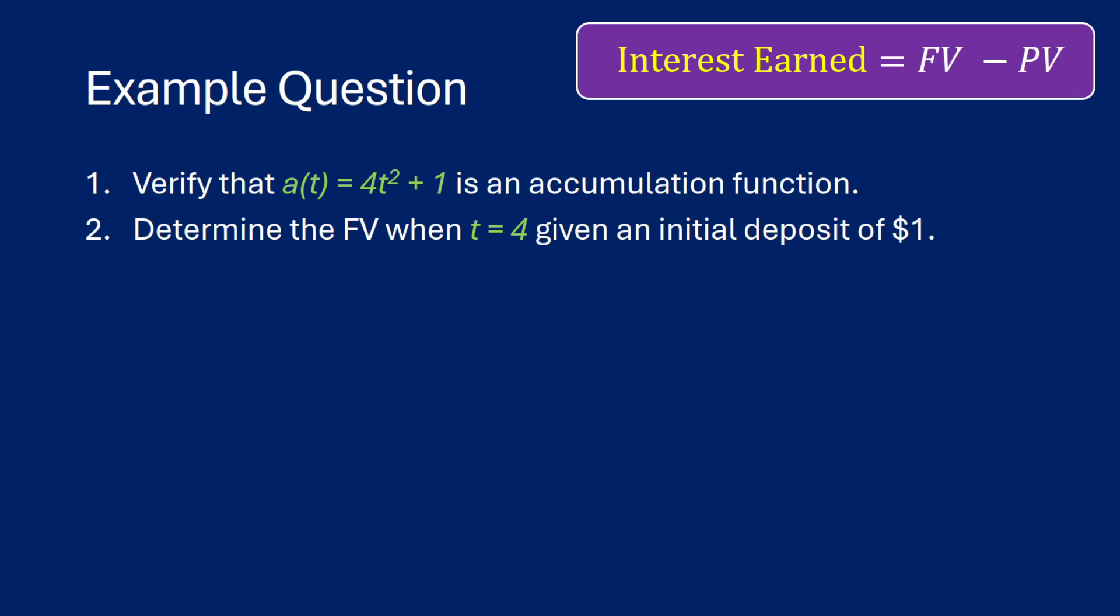So here's an example question. Let's verify that a(t) is equal to 4t² + 1 is an accumulation function. And then we'll determine the future value when t is equal to 4, given an initial deposit of $1.